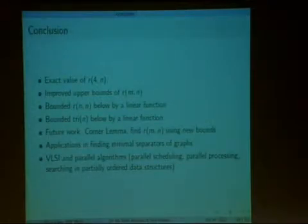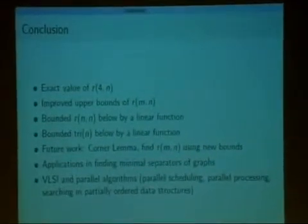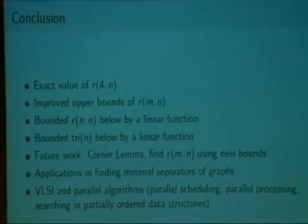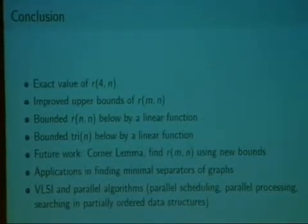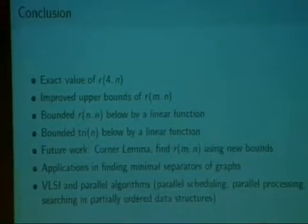So in conclusion, we found the exact rank number value for 4 by n grids. We've improved the upper bound for general grids, and we've improved the lower bound for both square grid graphs and triangle grid graphs. This has applications in finding minimal separator graphs, which can be applied to VLSI circuit layouts and a variety of parallel algorithms.